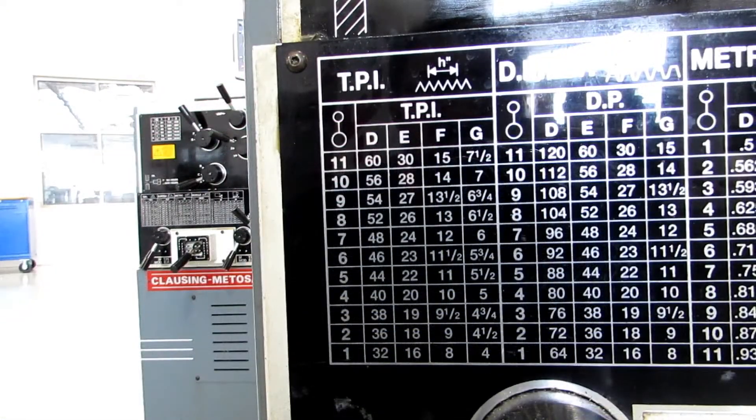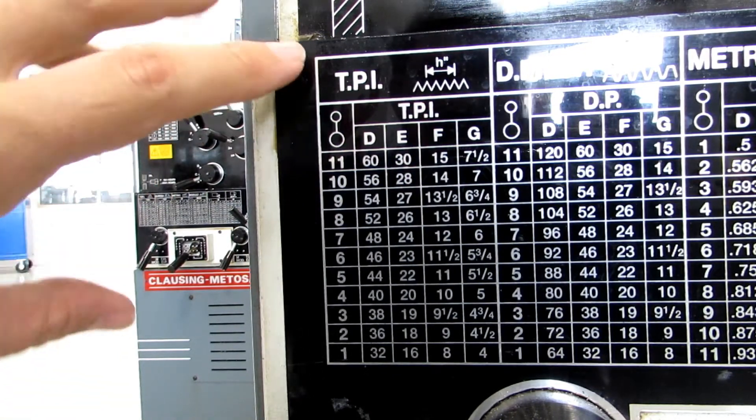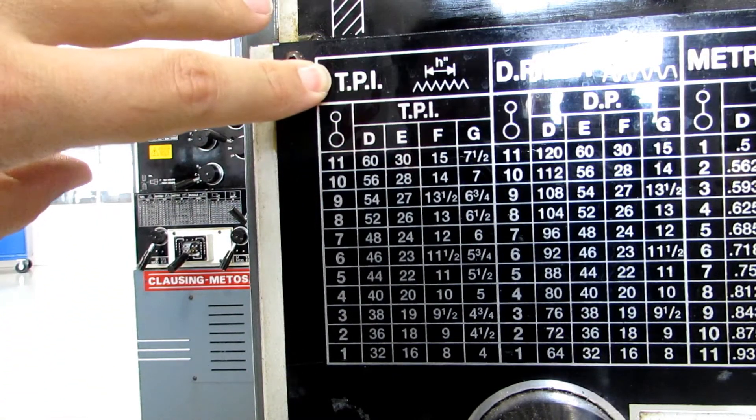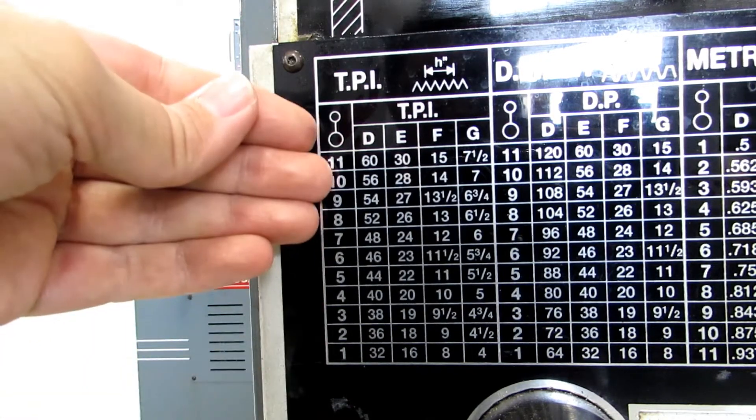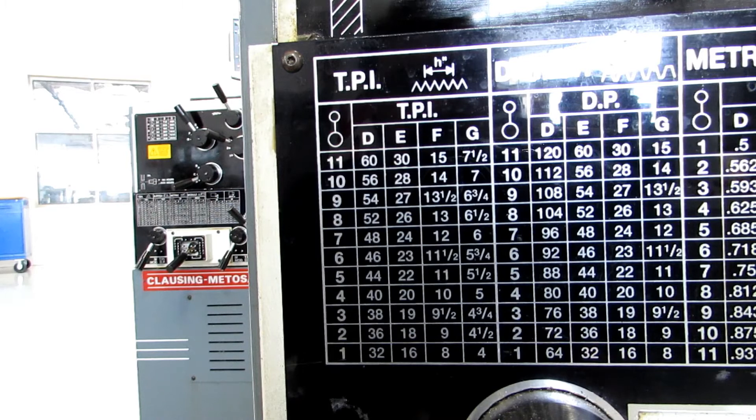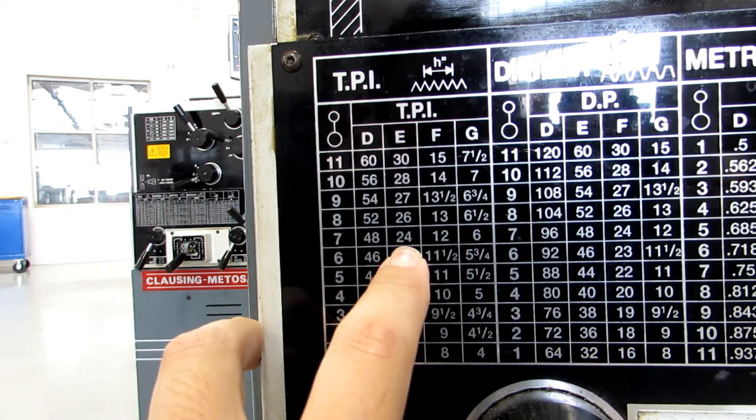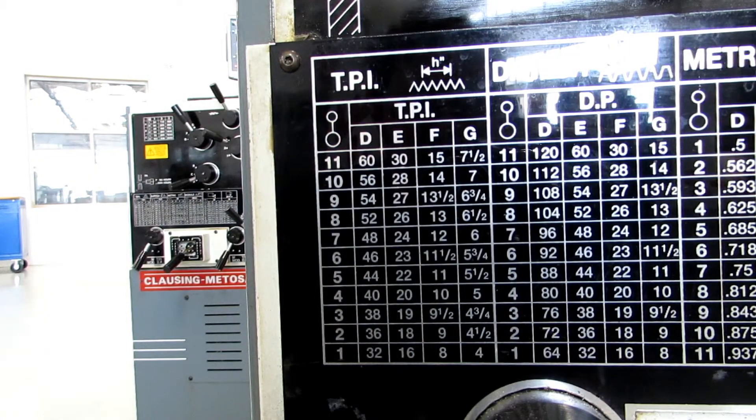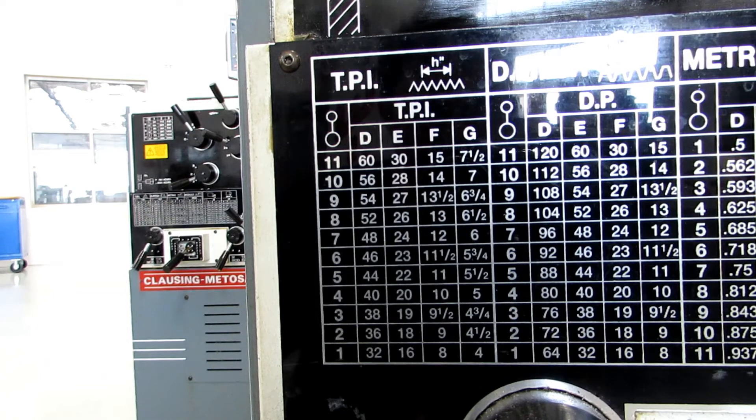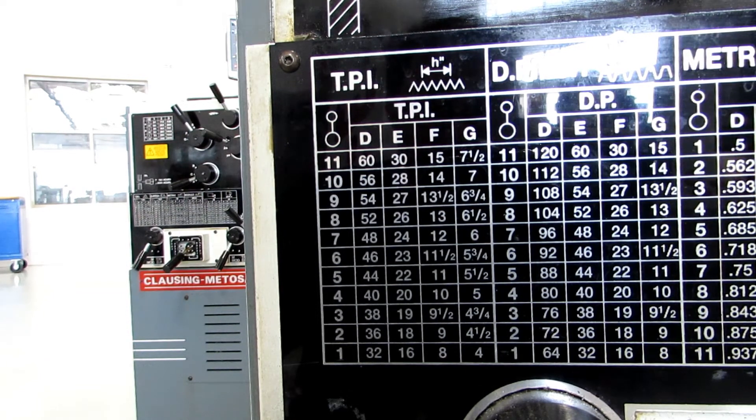Here's a close-up of the threads per inch chart, which you'll be using in this class. And it says TPI, which stands for threads per inch. And likewise, you have DEFG and 1 through 11. So, if you wanted to cut 24 threads per inch, for instance, you would be at E7 on your handles. You would also have to make sure that the three handles that I showed you earlier that control which type of feeding you're doing would all be on TPI, or threads per inch.